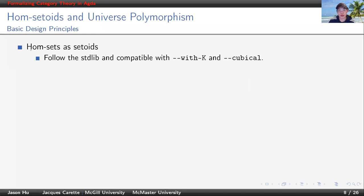We use setoids to model hom-sets. This allows us to follow the standard library that is compatible with K turned on and cubical Agda. We use universe polymorphism to allow concepts we use across different universe levels.